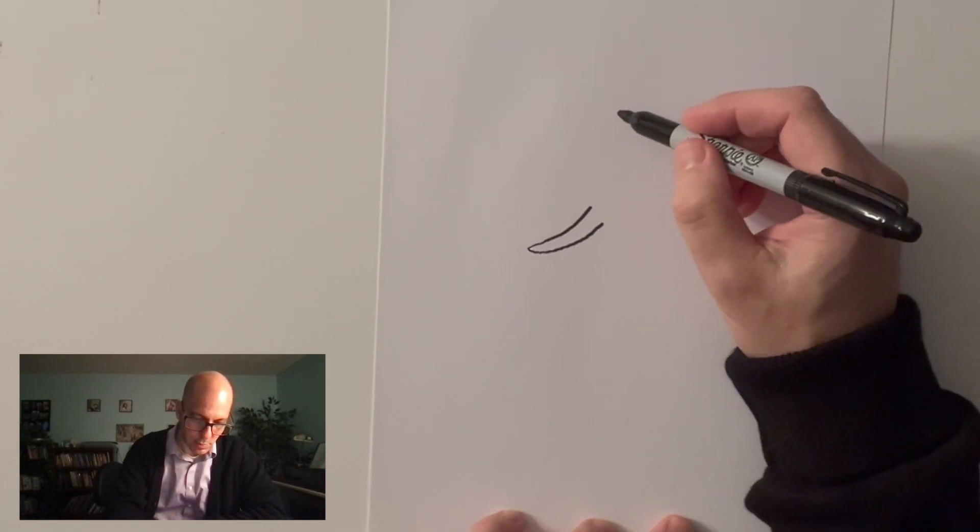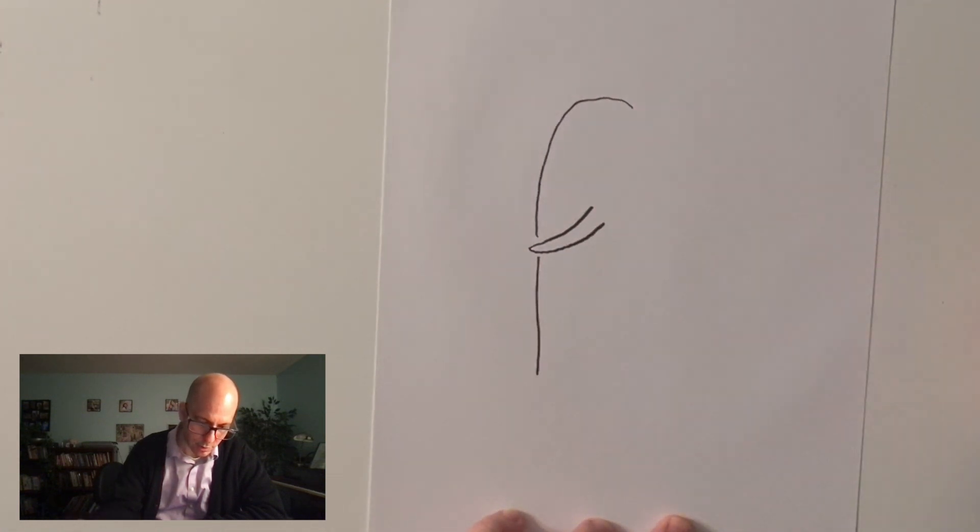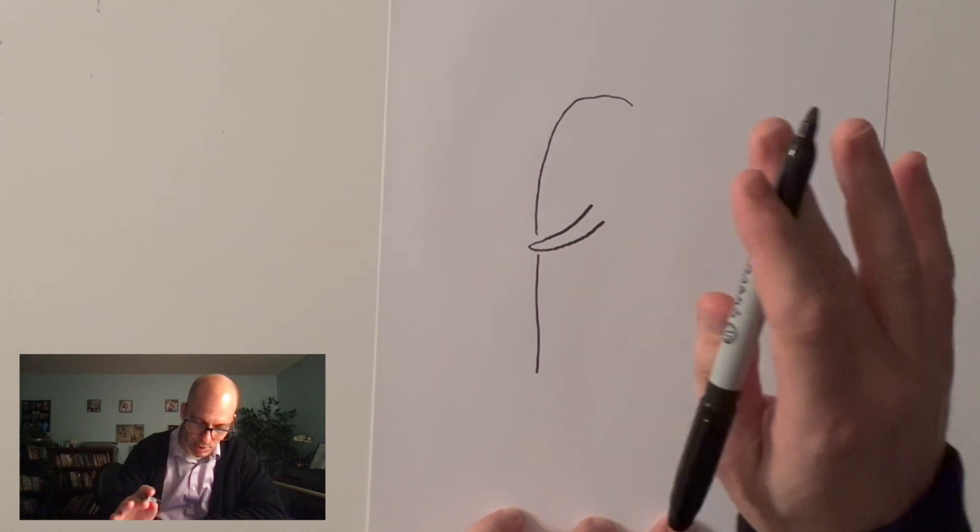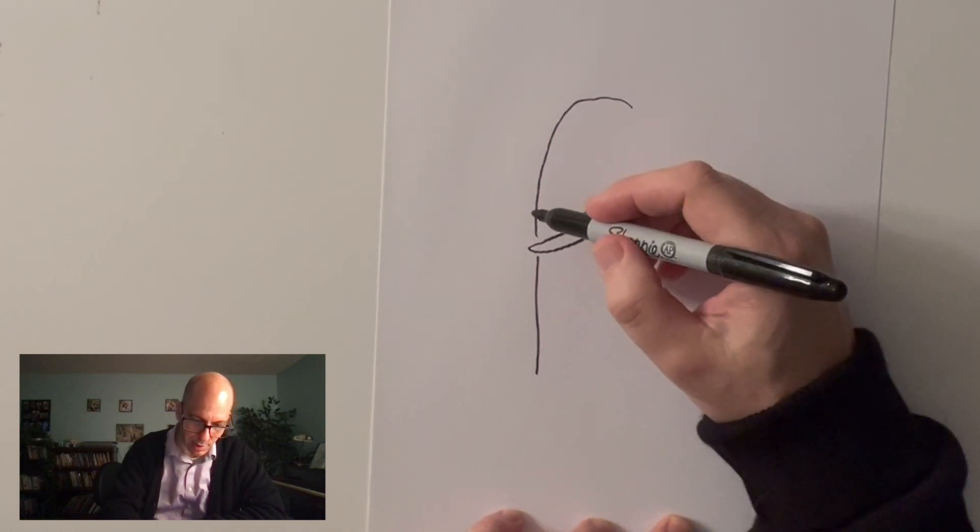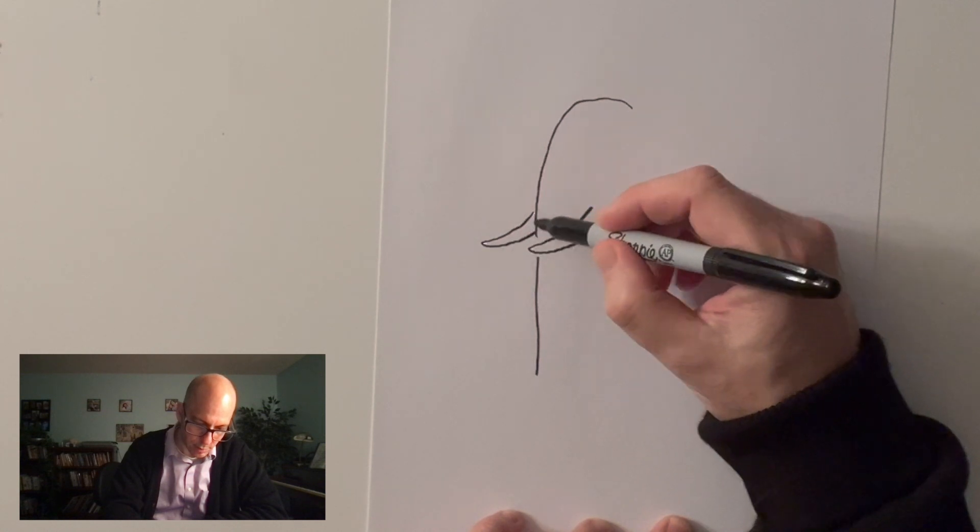And then, the next most important part is the head going down into the nose. Now, I don't finish it. I'm not coming back up yet. I'll tell you why in just a second. Next, I'll put in the other tusk. Another banana right there.